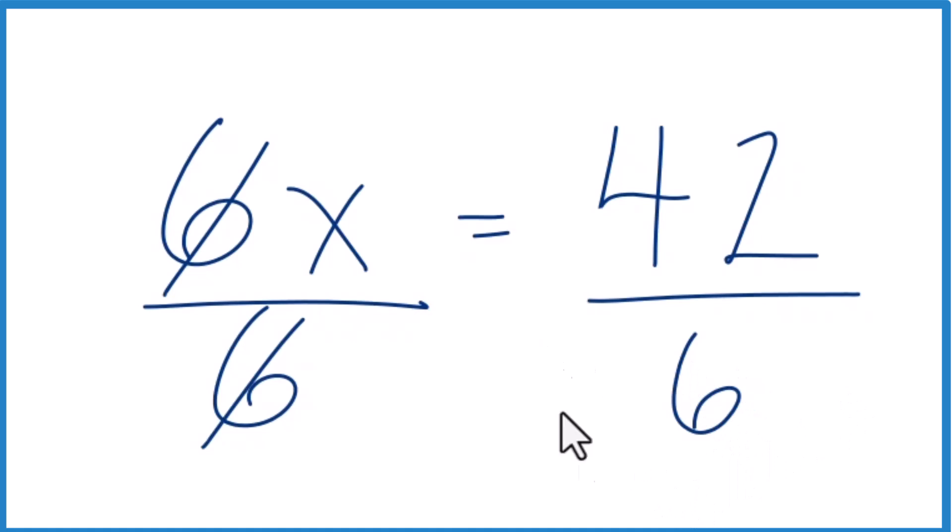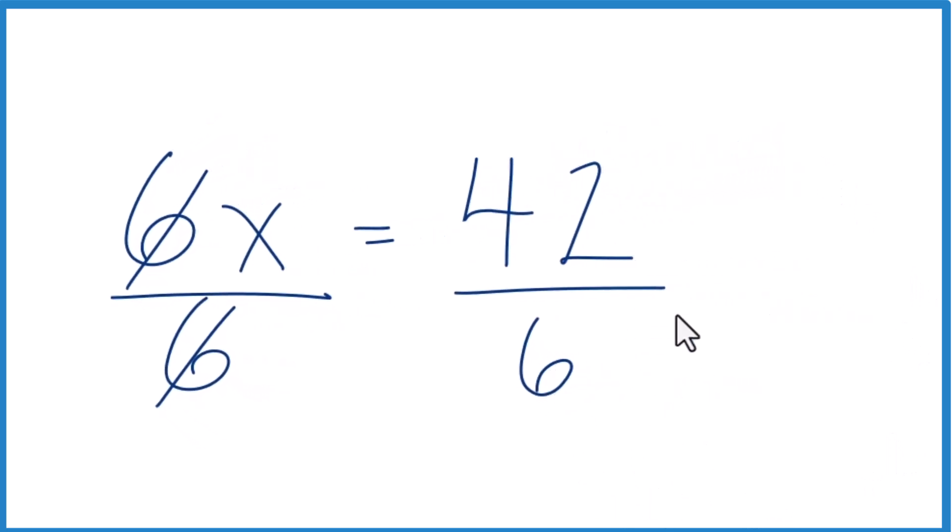But your teacher probably wants you to simplify this fraction. It turns out that we can divide 42 by 6. We get 7. 6 goes into 42 seven times. So x equals 7.